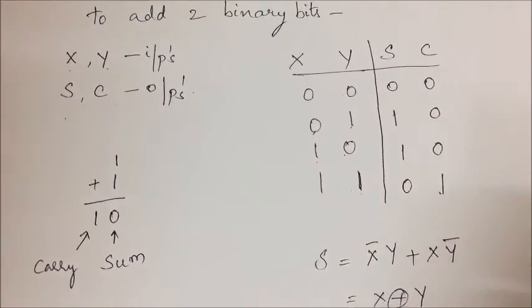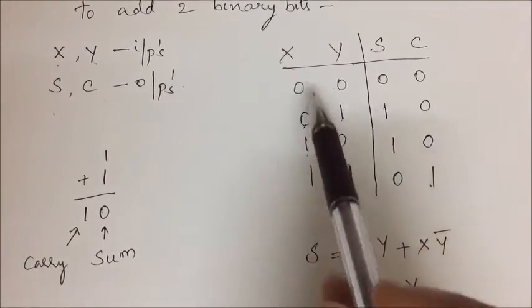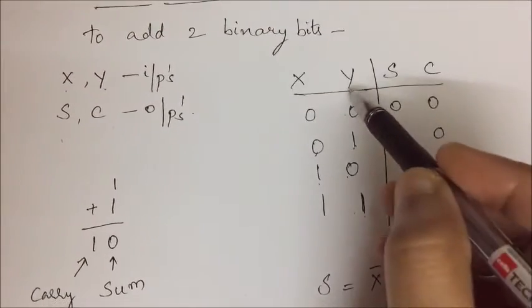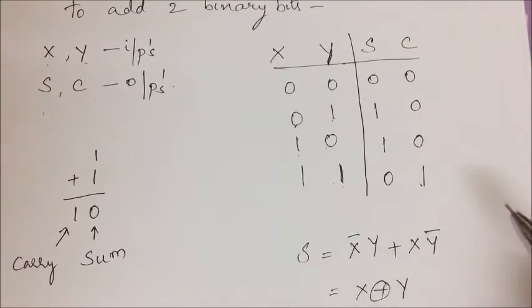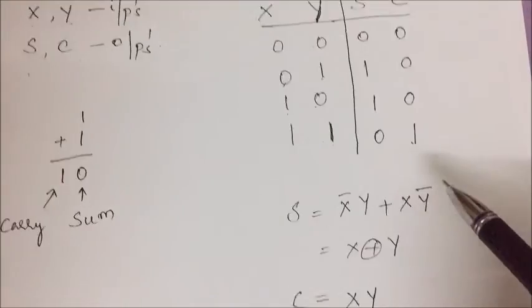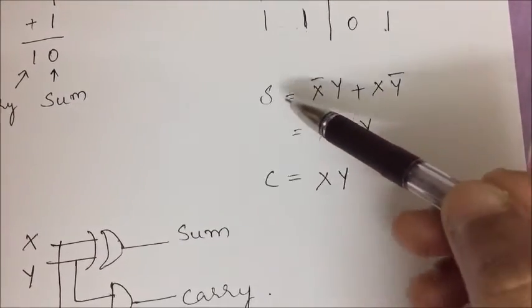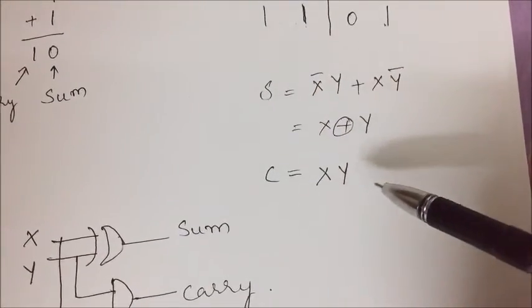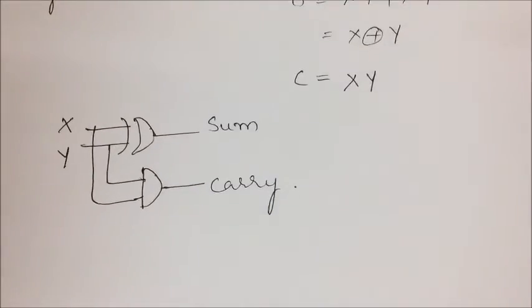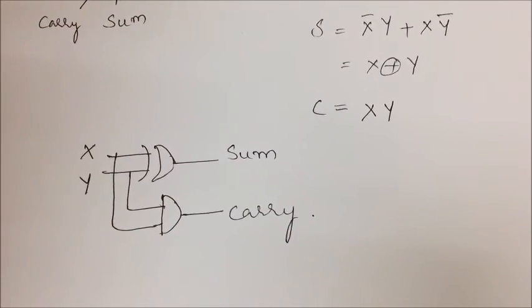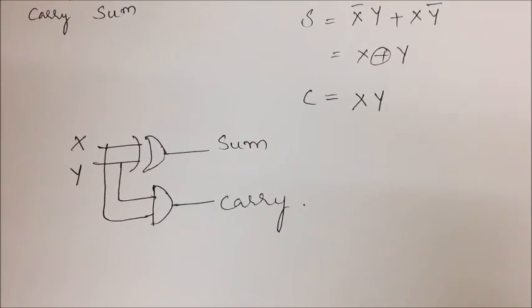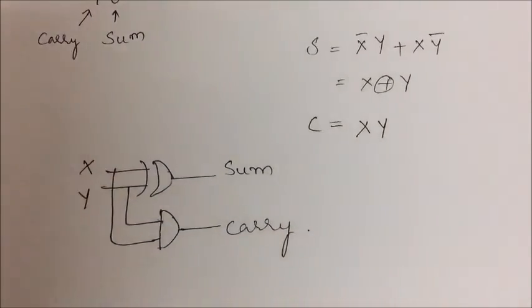Then we need to determine the truth table. Once truth table is determined we will get the expressions - that is output expressions in terms of inputs - and then we will finally draw the circuit diagram. This completes all the steps of design of a combinational circuit in this case half adder design. Thank you.